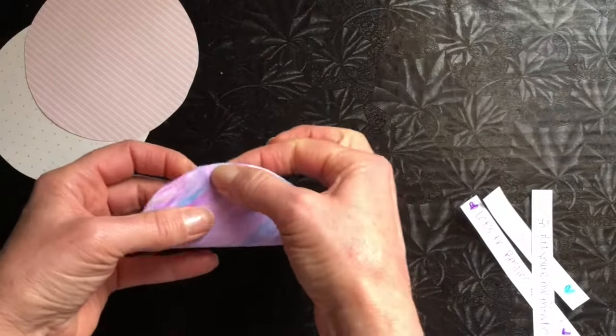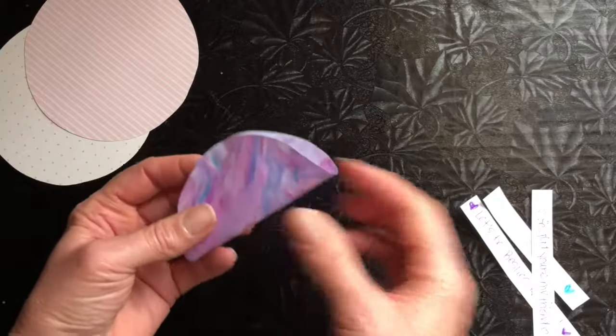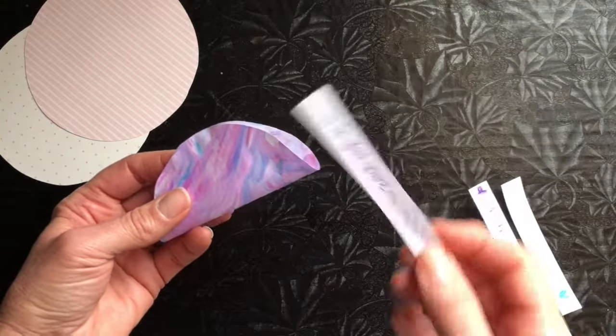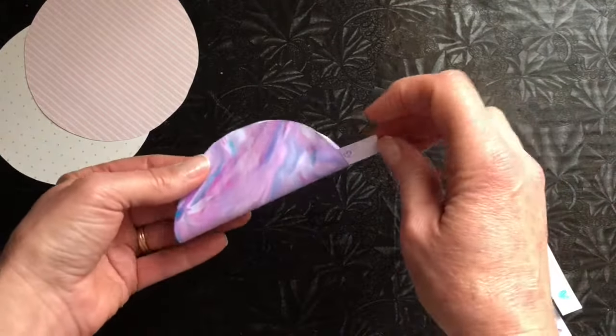And when your glue has fastened the two sides of the paper together, you're just going to slip one of your messages into the cookie.